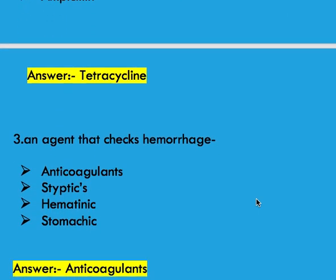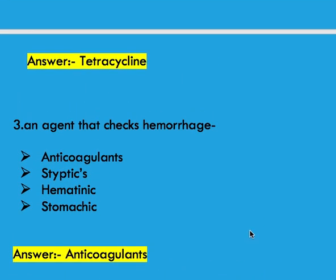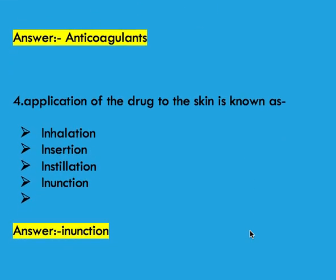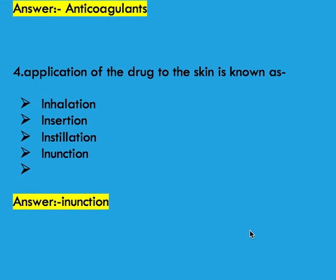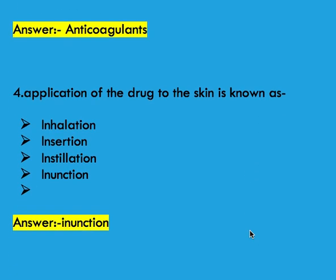Next question: an agent that checks hemorrhage. Options: anticoagulants, styptic, hematonic, and stomatic. Right answer is anticoagulant. Next question: application of the drug to the skin is known as. Options: inhalation, insertion, instillation, and inunction. Right answer is inunction.